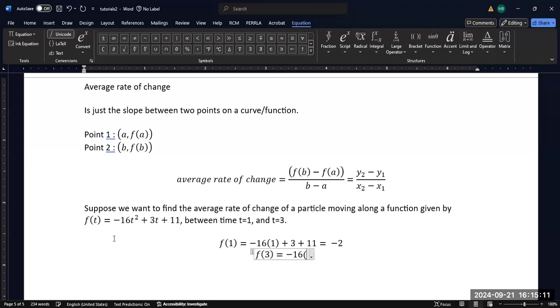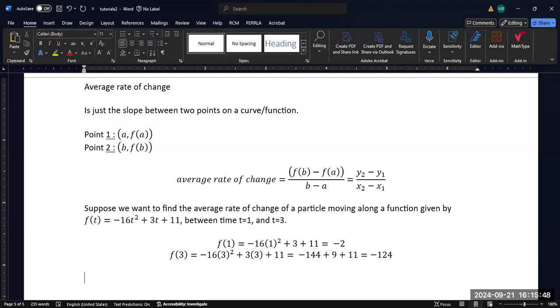In this case, we'd have -16, and this would be 3 squared plus 3 times 3 plus 11. And so this would give me -16 times 9 is going to be -144, plus 9 plus 11 is going to give me -124. So f(b) is this since b is 3, and f(a) is -2 since a is 1.